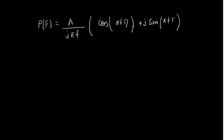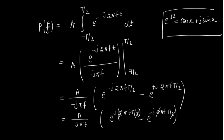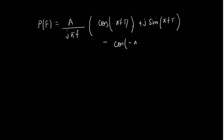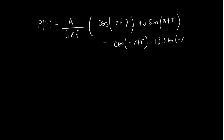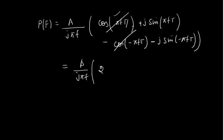Expanding, we get terms with cos(−πFt) and sin(−πFt). Since cos(−x) = cos(x), the cosine terms cancel out. Since sin(−x) = −sin(x), the sine terms add up, giving us 2j·sin(πFt).